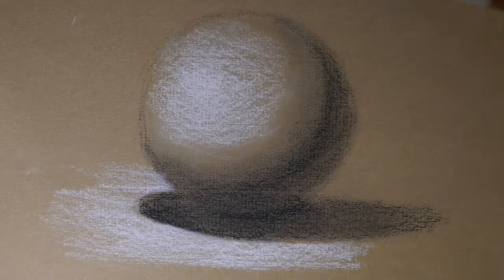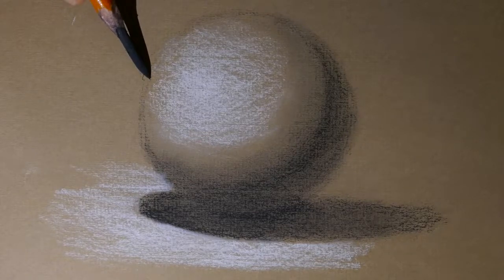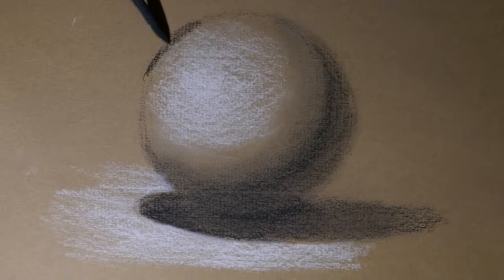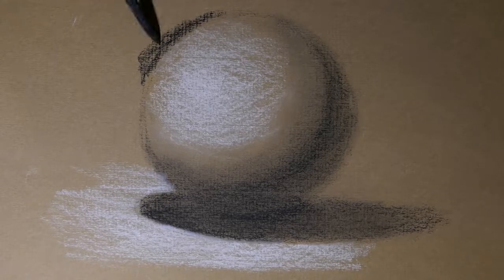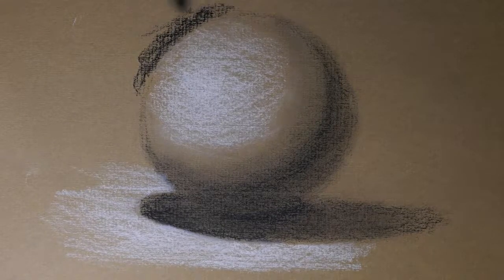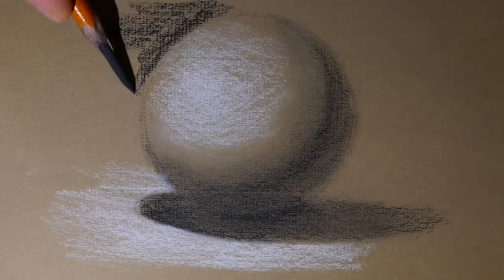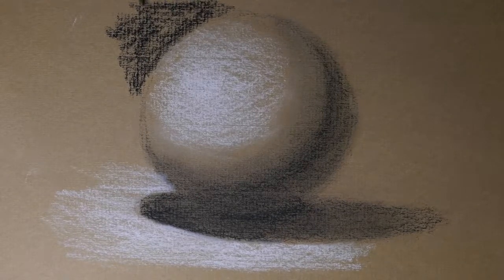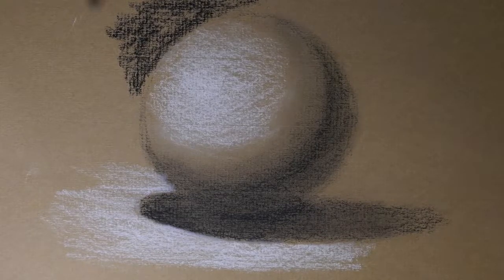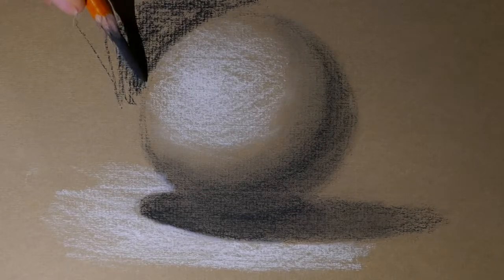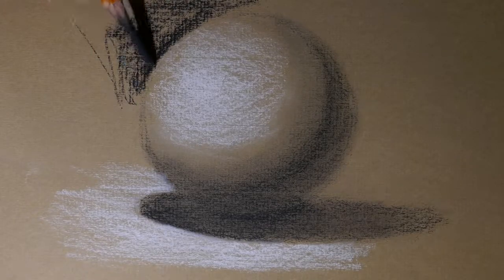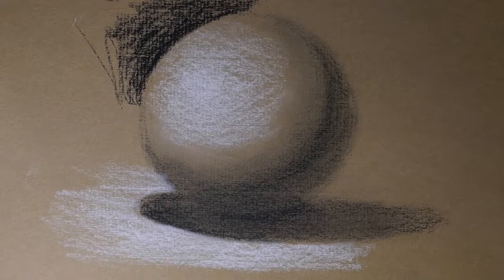Now on this edge over here, if I want to pop it and make sure we realize that it's a light edge, I'm going to darken the background right at the edge. Because the light is coming from this direction, the more I make this hard and crisp, the more we will read that as a light, the surface turning away from us.